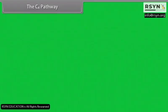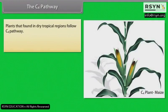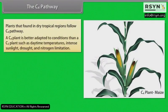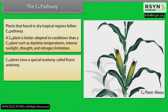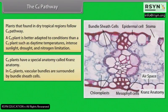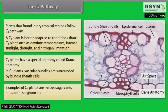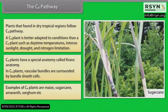Plants found in dry tropical regions follow the C4 pathway. C4 plants are better adapted than C3 plants to conditions such as high daytime temperatures, intense sunlight, drought, and nitrogen limitation. C4 plants have a special anatomy called Kranz anatomy, in which vascular bundles are surrounded by bundle sheath cells. Examples of C4 plants are maize, sugarcane, amaranth, and sorghum.